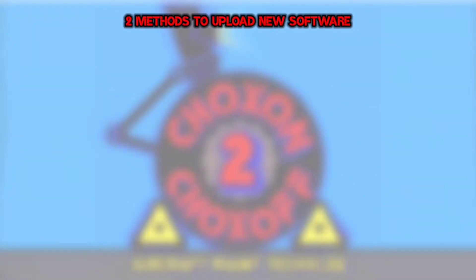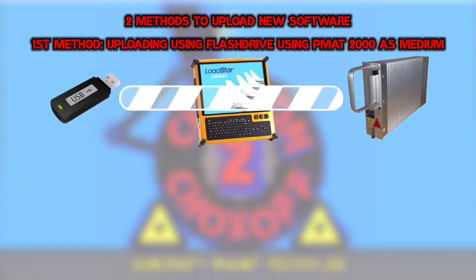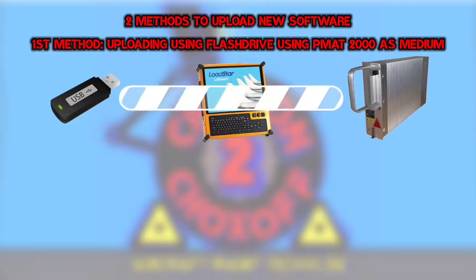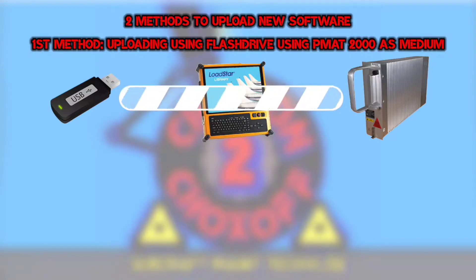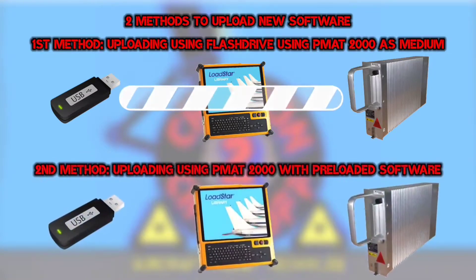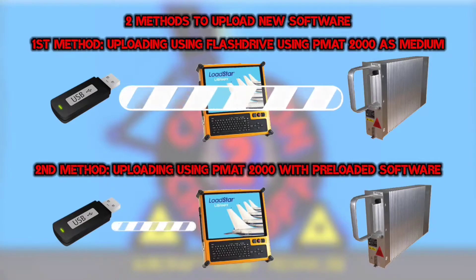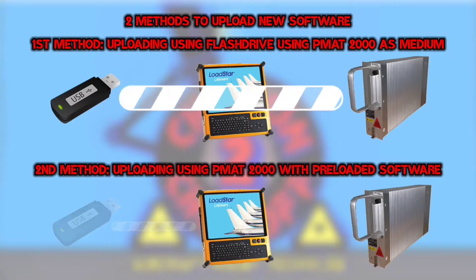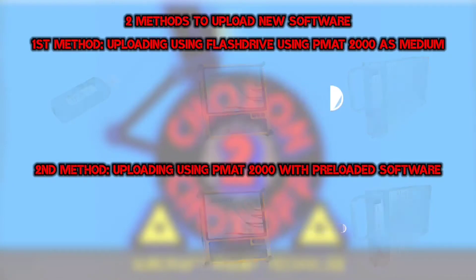There are two methods of uploading. First, using a flash drive directly with PMAT as a medium — in this way we always need the flash drive and PMAT together each time we do uploading. Second method is using PMAT with preloaded software — in this method, we upload the software from the flash drive to PMAT first, and then PMAT is used to upload it to the aircraft without the need of a flash drive, any number of times.